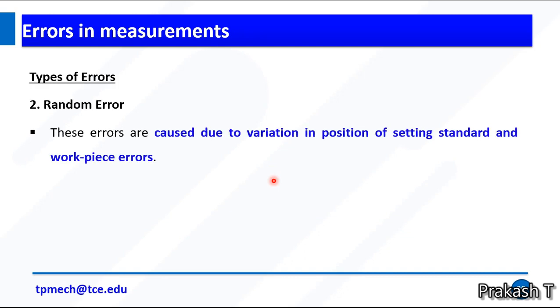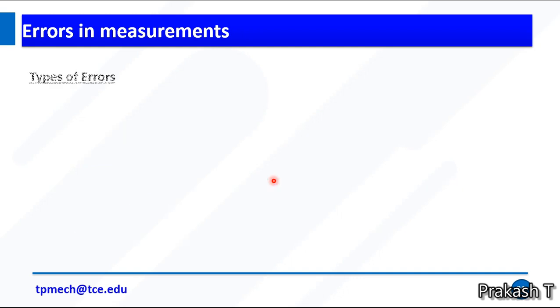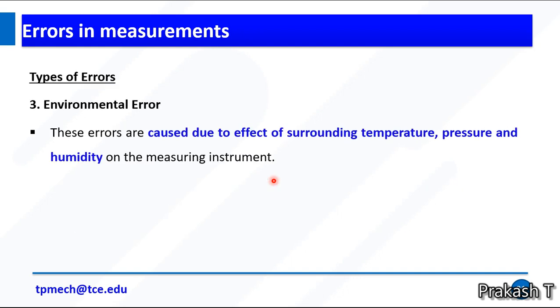The second error is random error. This error is caused due to the variation in position of setting standard and workpiece errors, due to displacement of level joints of instruments, due to backlash and friction. These errors are non-consistent and hence the name random errors. The third one is environmental error. This is caused due to the effect of surrounding temperature, pressure and humidity on the measuring instruments. External factors like nuclear radiation, vibration and magnetic field also lead to this error.